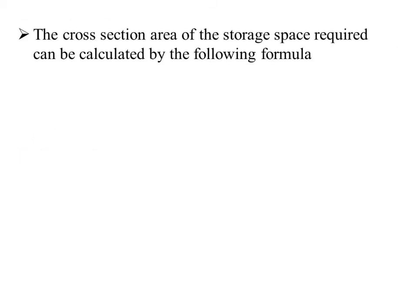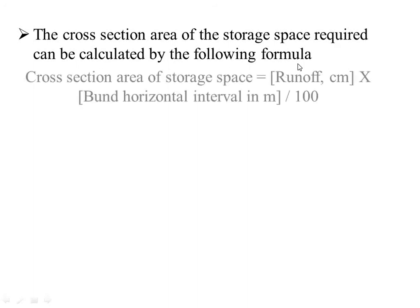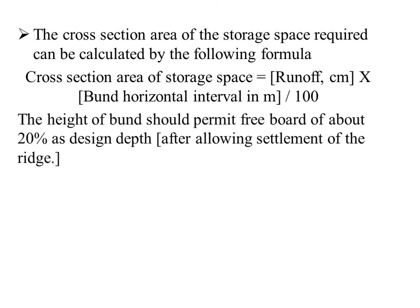The cross-section area of storage space required can be calculated by the following formula: cross-section area of storage space equals runoff in centimeters multiplied by bund horizontal interval in meters, divided by 100. The height of the bund should permit a freeboard of about 20% as design depth, after allowing for settlement of the ridge.